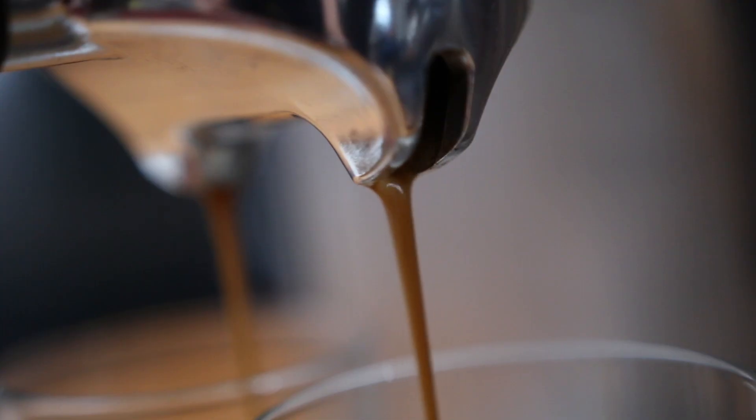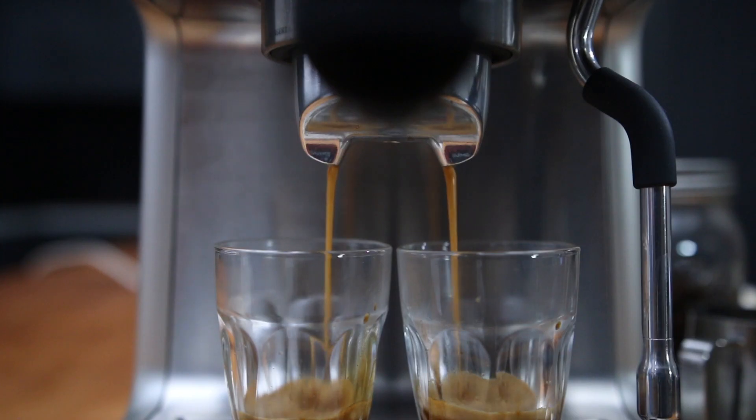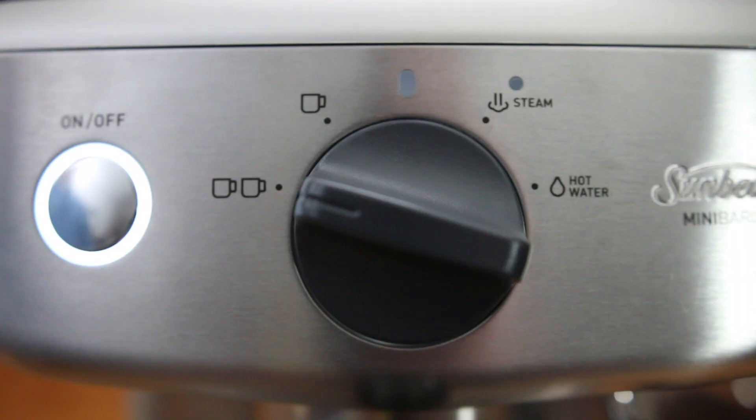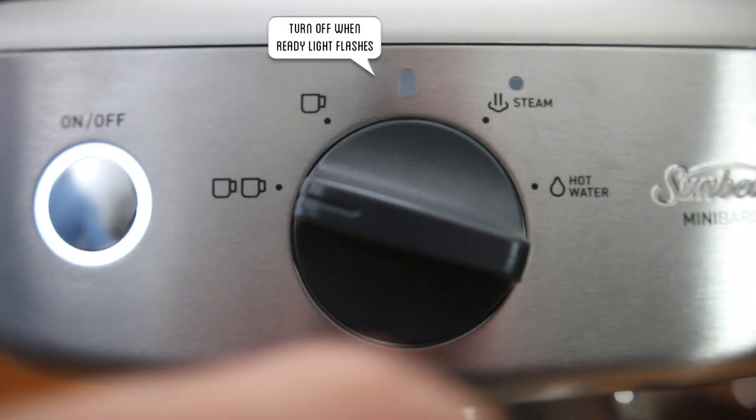With your shot we're looking for a dark caramel almost syrup like texture. If it's a slow drip or a pale watery flow you're going to need to make some adjustments with your coffee. Turn it back to the top once the shot has stopped.